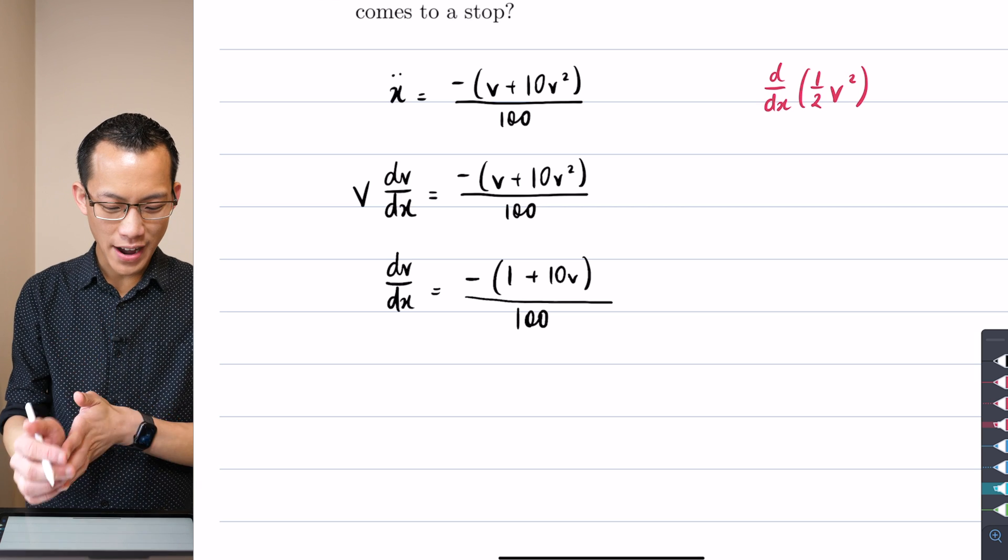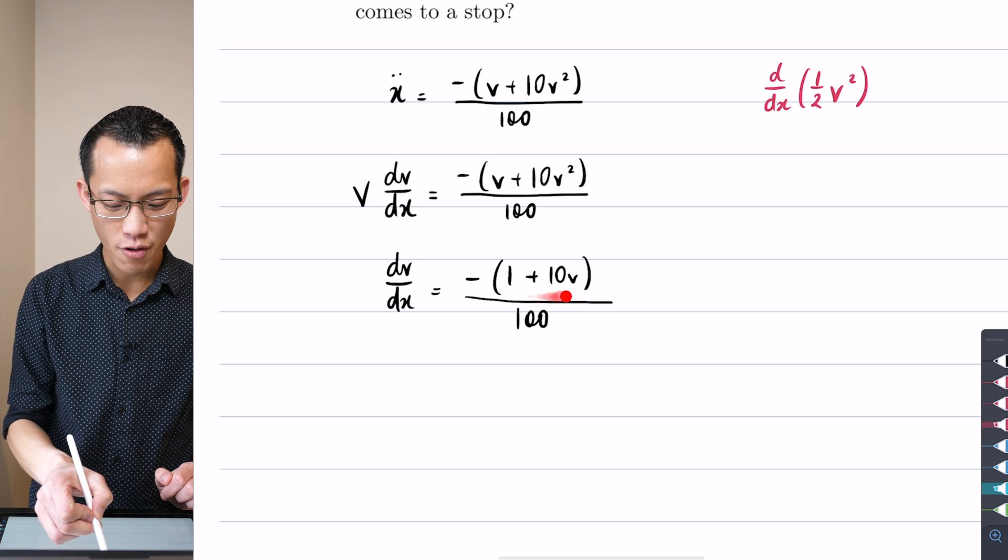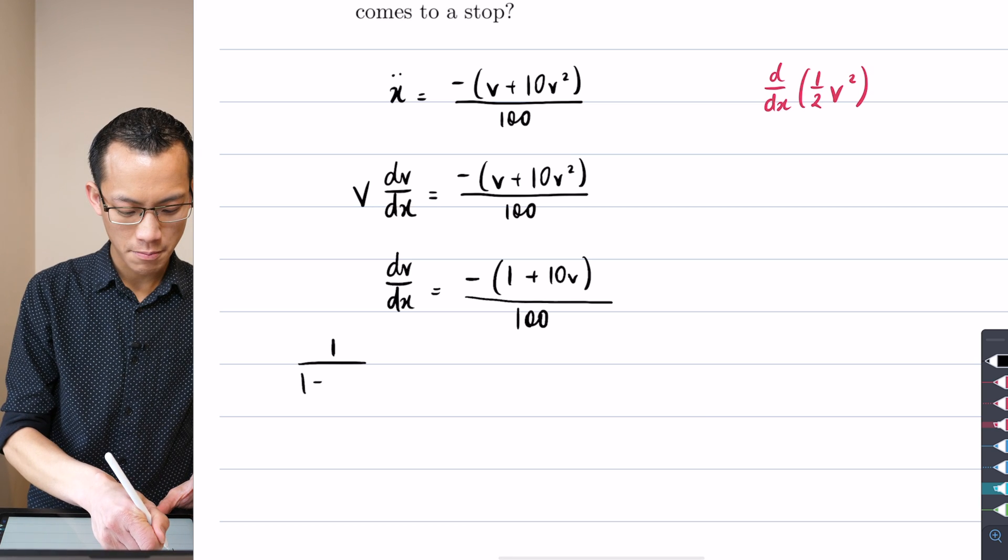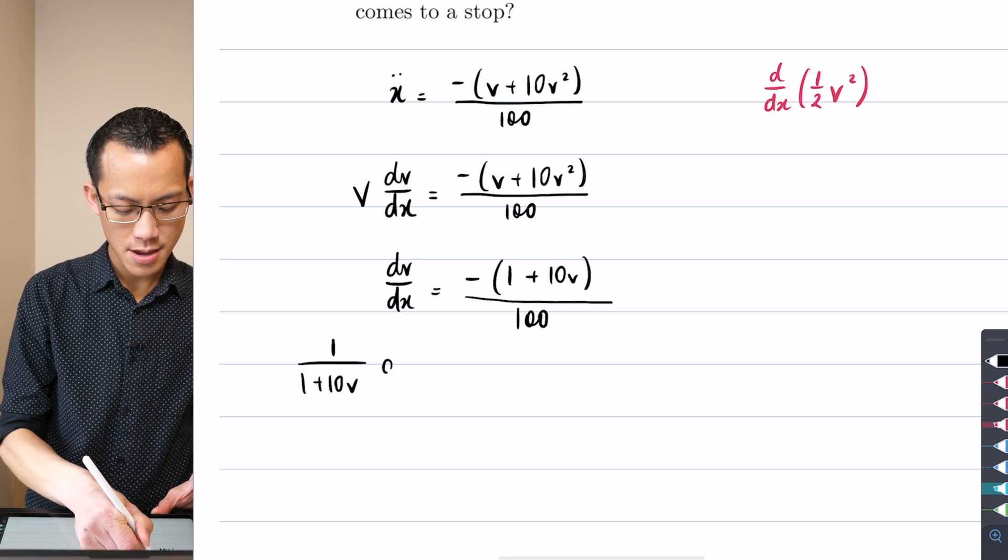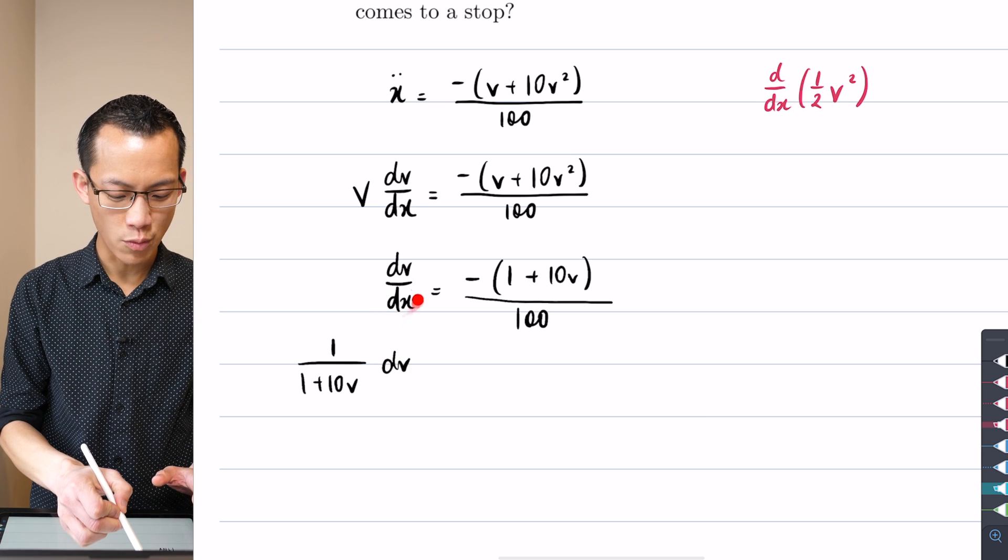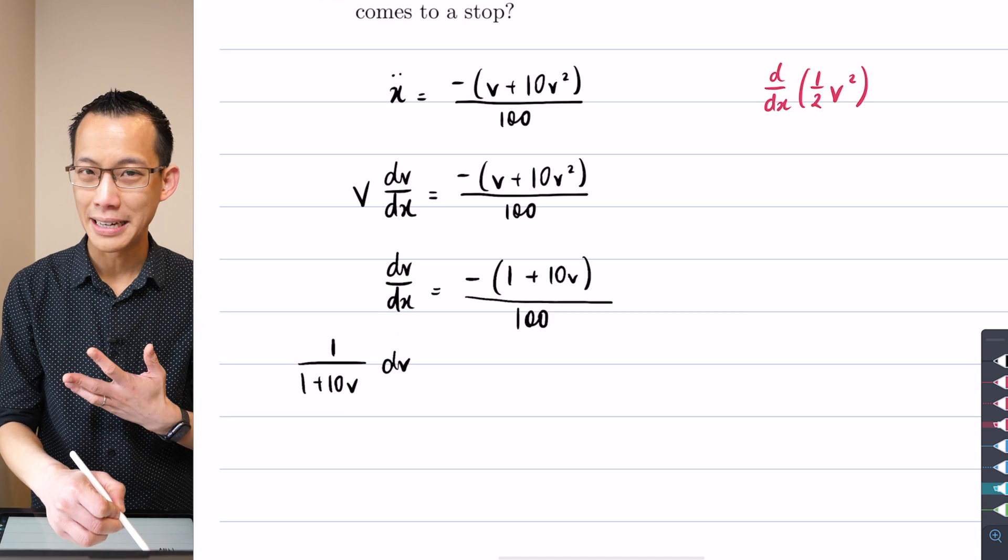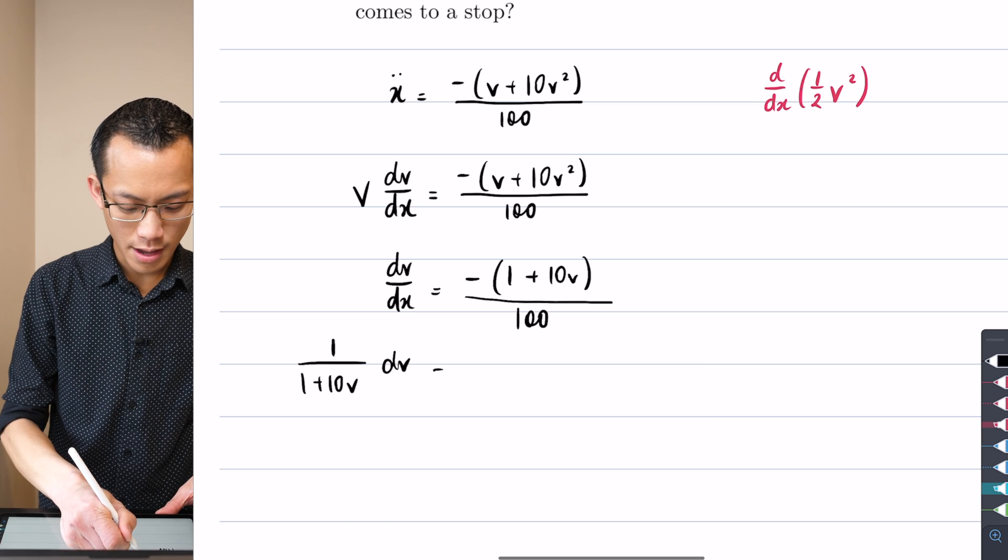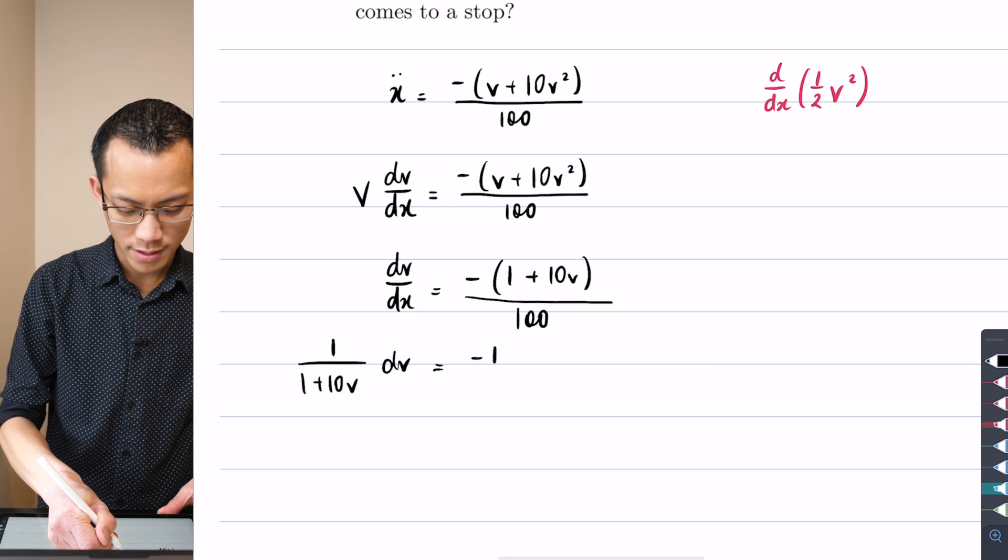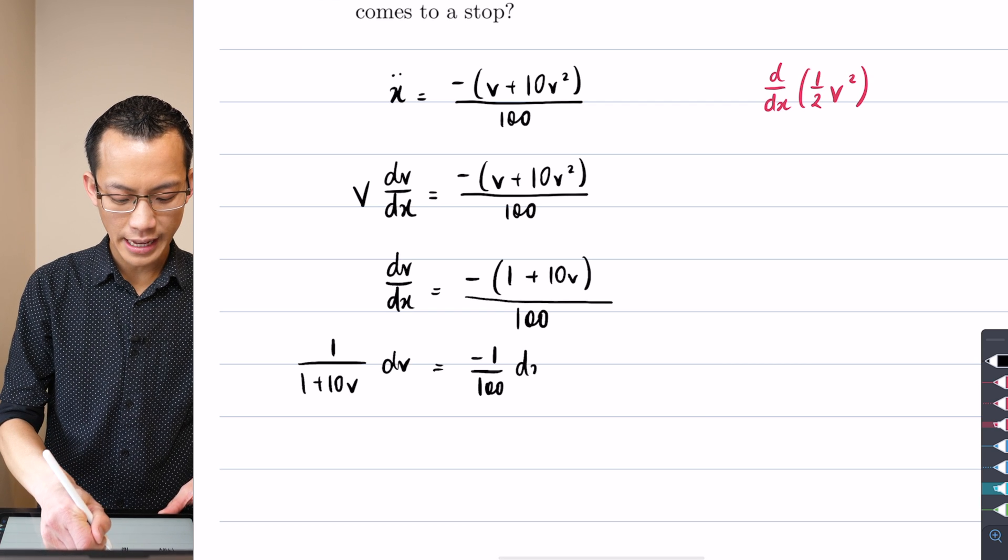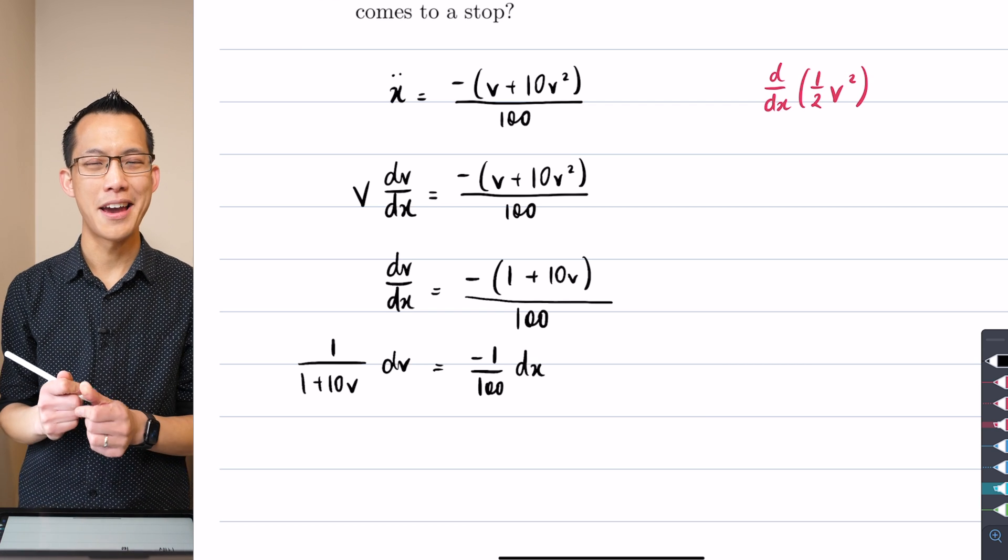I'm going to divide through by this numerator up here. So I'm going to get 1 on 1 plus 10v dv. So that's what I get from the left hand side and the reason why I haven't written the dx is because I'm about to multiply through by dx, get all my dv's on one side dx is on the other side. So what does that leave me with? Equal to minus 1, I didn't divide through by that negative, over 100 and then that gives me dx on the right hand side.